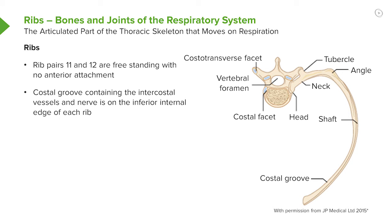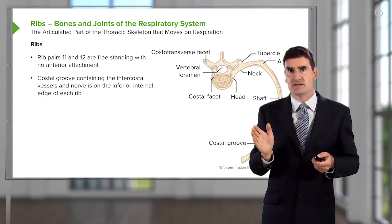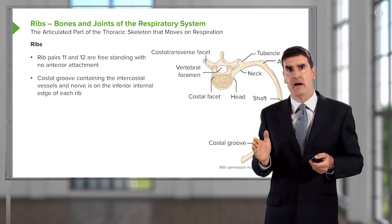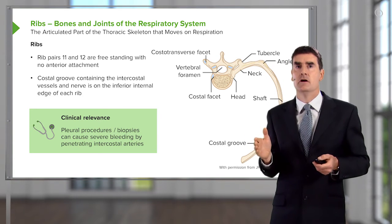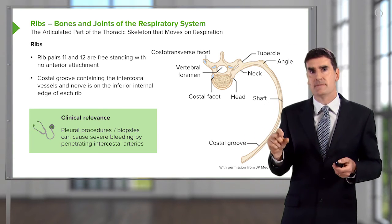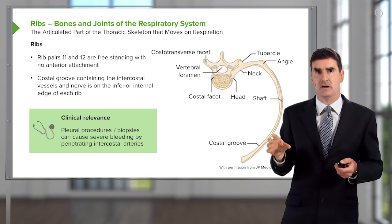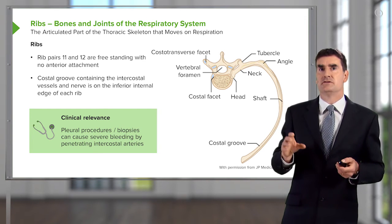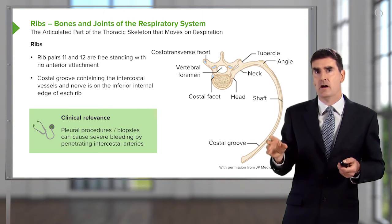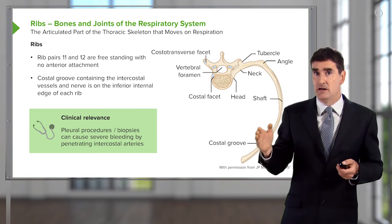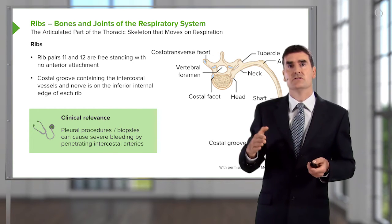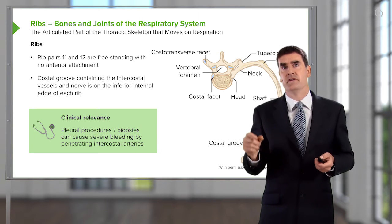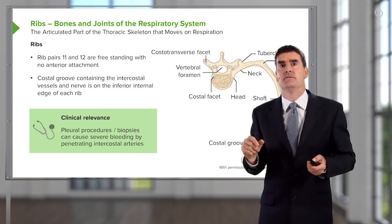These neurovascular structures all run together in a groove on the inferior surface of each rib. It is important to know this because any procedure involving putting needles or drains through the gaps between the ribs — an intercostal drain, for example — could penetrate the artery and cause bleeding, which very occasionally can be fatal. So it is critical to know that these vessels run just underneath each rib.